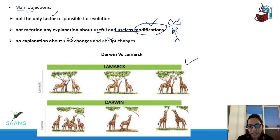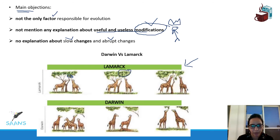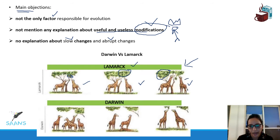Now let's look at a comparison between Darwin and Lamarck using a giraffe illustration. In the picture, the trees are short and the giraffes are eating leaves. As the trees grow taller, the giraffes have to stretch their neck to reach the leaves. Lamarck said that because of this habit of stretching their necks to eat, the giraffes developed the long neck they have. This was Lamarck's explanation.